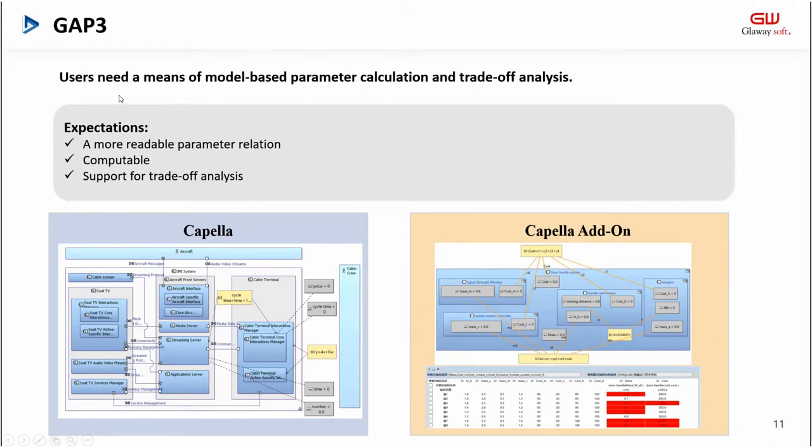Gap 3: users need a model-based parameter calculation and trade-off analysis. The user expectations are: a more readable parameter relation, computable, and support for trade-off analysis. Parameter value transfer among components and trade-off analysis are two very important issues. We think the SysML-based parametric diagram and its specification are the optimal solution. As can be seen from the figure, our parametric diagram looks somewhat different from the style of the parametric diagram in SysML, but the design principles are the same.